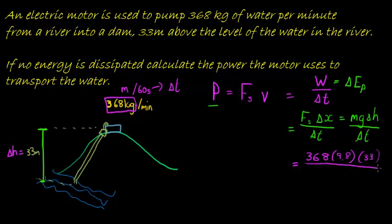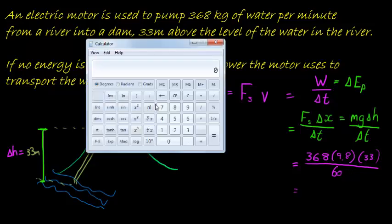And time is 60 seconds. And let's calculate that, 368 times 9.8 times 33 is equal to, divided by 60. 1983.52.